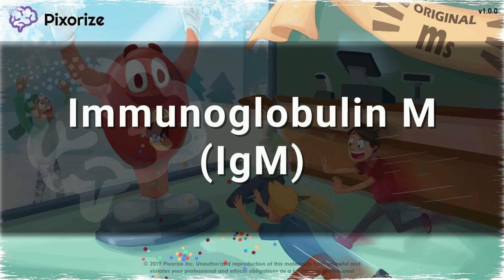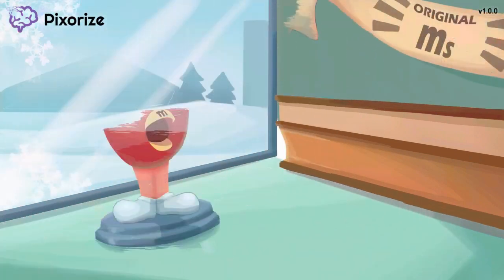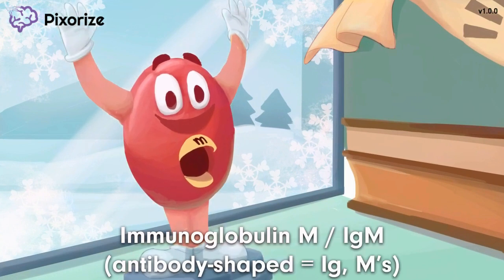In this visual mnemonic, I'll give you an easy way to remember all the key facts about IgM. Welcome to the M's Store, purveyor of the world-famous M's candy. Take a closer look at that big M's dispenser. See how the dispenser has its hands up so that it looks like the Y shape of an antibody? This antibody-shaped M dispenser is our anchor for immunoglobulin M, or IgM. The Y shape of the dispenser makes me think of antibodies or immunoglobulins, and the M's candy represents the letter M. Put this together, and you get IgM.